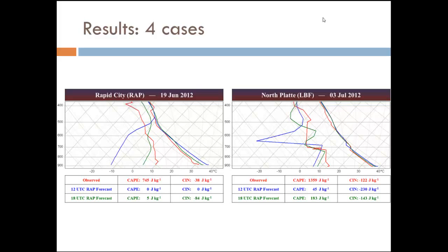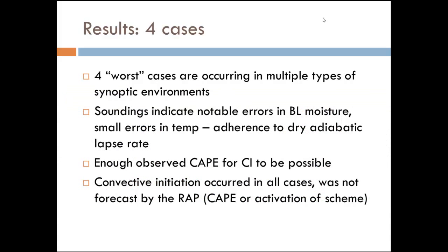I've zoomed in on the low levels because that's really where the problems are occurring. Most of the errors are really occurring in that near-surface to boundary layer layer. In those four cases — the four worst forecasts — they're occurring in multiple types of synoptic environments, so I'm not seeing a pattern there. But the soundings do indicate notable errors in that boundary layer moisture with fairly small errors in temperature. I think that's mostly because it's adhering to the dry adiabatic lapse rate. You did also see a super-adiabatic layer near the surface on some model forecasts, which led the RAP to forecast highs of around 114 on a couple of days here in Kansas City.